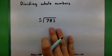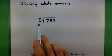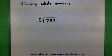So I want to do this problem much the same way that I explained dividing in my last video. We're going to take 5 into 783 one at a time.